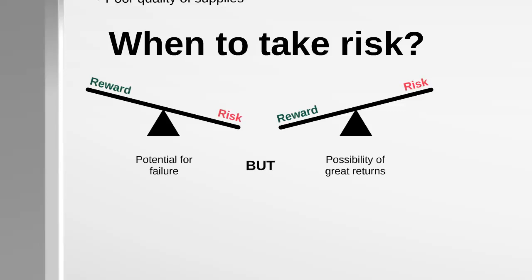However, there is the potential for failure even in the scenario where the reward is better than the risk, and there's also the possibility of reward when the chance of risk is higher. So it's not entirely binary — we can't simply say there's a 90% chance of success in one and 90% chance of failure in the other, as failure and reward remain possible in both scenarios.